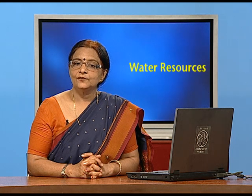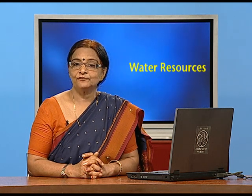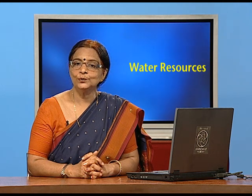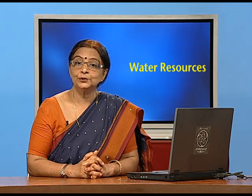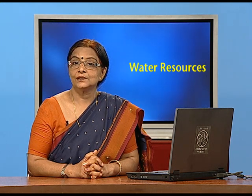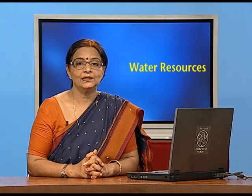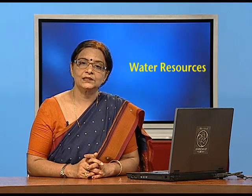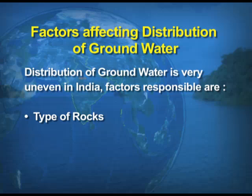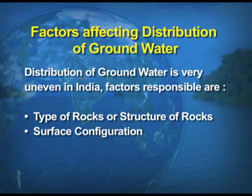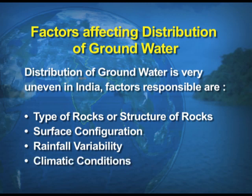The factors that affect the distribution of groundwater are: first, the type or structure of rocks; second, the surface configuration; third, rainfall variability; and fourth, climatic conditions. The soft and permeable rocks of the northern plains of India allow large quantities of water to percolate. Two key terms here are permeability and percolation through pores, joints, or cracks.